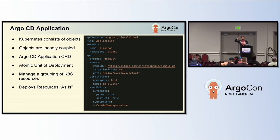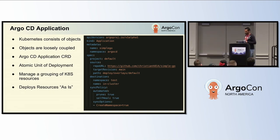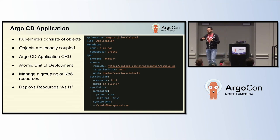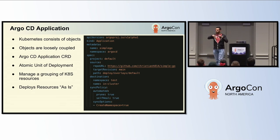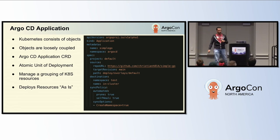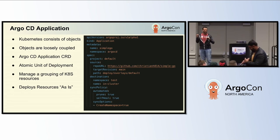I want to give a background on why we have the Argo CD application CRD and why we have that object. It's basically because Kubernetes consists of objects — things like pods, deployments, services — and they're all loosely coupled, meaning they're independent. You can deploy them independently and update them independently. You loosely couple them together with labels, and you build relationships between objects with labels.